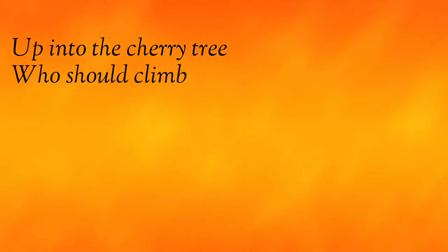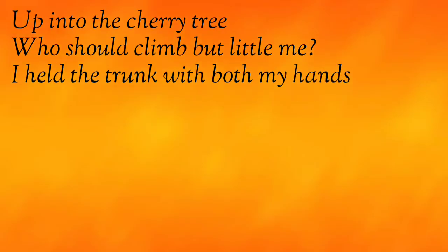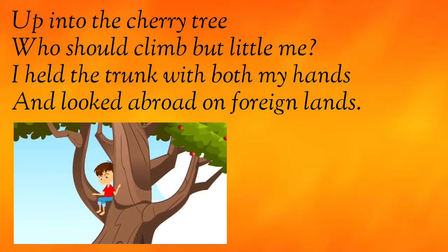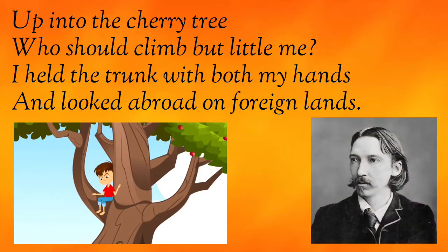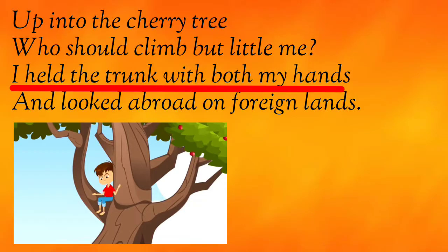Let me begin with stanza 1, which goes like this: 'Up into the cherry tree, who should climb but little me? I held the trunk with both my hands and looked abroad in foreign lands.' In this stanza, the poet is talking about a little child climbing up a cherry tree — and who is this little child? It's the poet himself. The child has climbed up the cherry tree and is holding the trunk with both his hands.